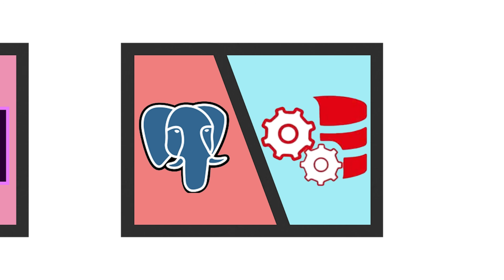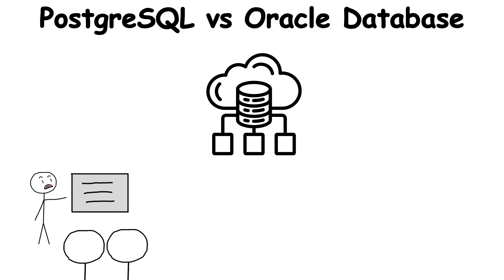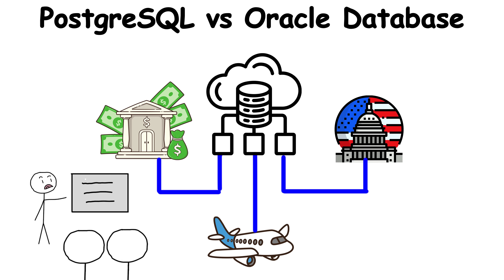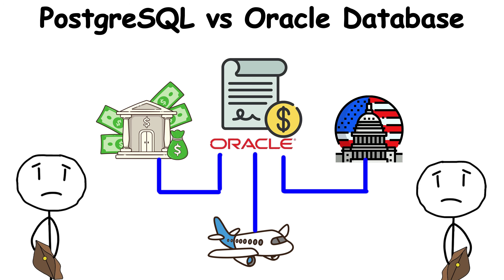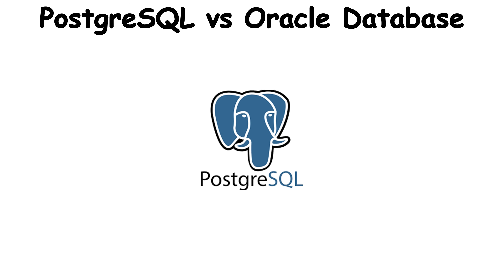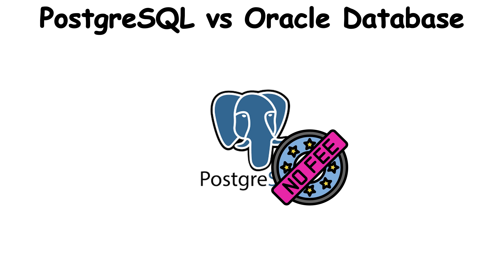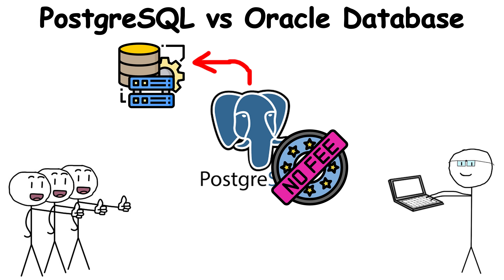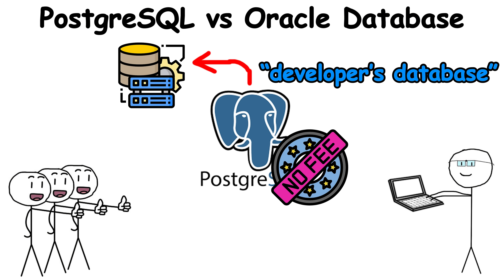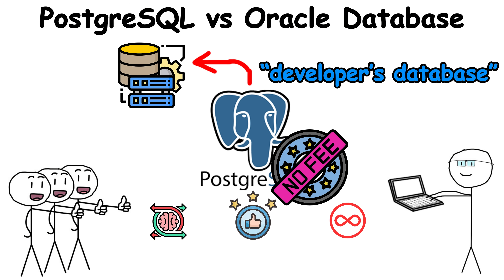PostgreSQL vs. Oracle Database: The backbone of banks, airlines, and governments often runs on Oracle's database system, and the licensing costs are massive. PostgreSQL, meanwhile, is free and has become powerful enough to rival it. Engineers call Postgres the developer's database because it's flexible, reliable, and endlessly extendable.